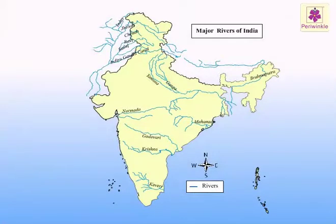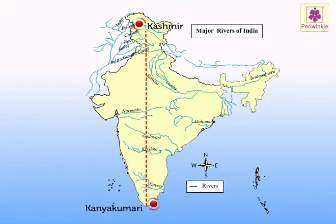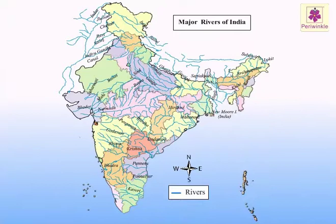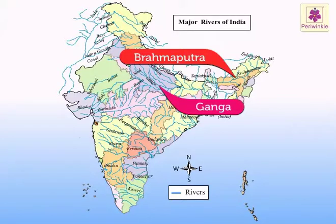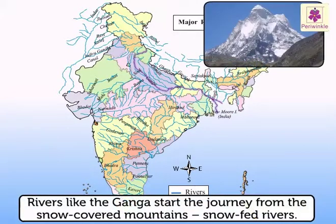India is a land blessed with many rivers which crisscross our land, from Kashmir to Kanyakumari, from Gujarat to Assam. Rivers flow through all these states, and almost every state has at least one river passing through it. The rivers may be small or big, like the Ganga and the Brahmaputra.